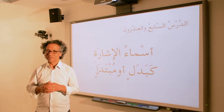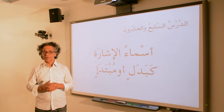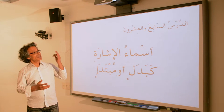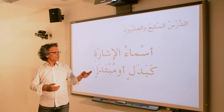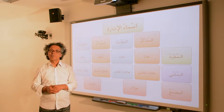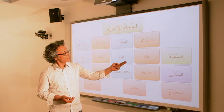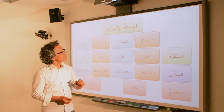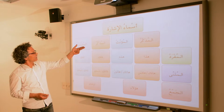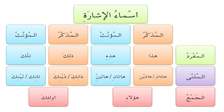We are looking at demonstratives and how they are combined with phrases and with sentences. Let's look at أسماء الإشارة and learn them. We have المفرد والمثنى والجمع — المذكر والمؤنث in each of these cases. First, we have أسماء الإشارة للقريب and أسماء الإشارة للبعيد — it's the difference between 'this' and 'that'.